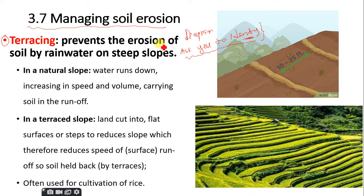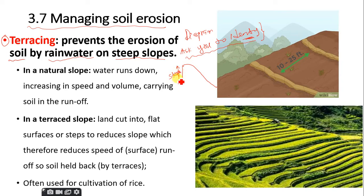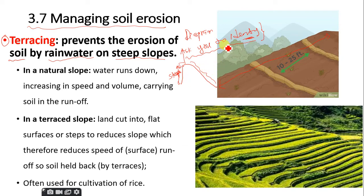Terracing prevents the erosion of soil by rainwater on steep slopes. Obviously, the rate of erosion on a steep slope is higher than on a gentle slope. If you have a steep slope or landscape formation, this steeper part — if rain falls, there will be a higher rate of erosion than on a gentle slope. What terracing does is alter how water moves down a steep slope. The rate of erosion on a steep slope will be quite high, hence the need for terracing or contour plowing.